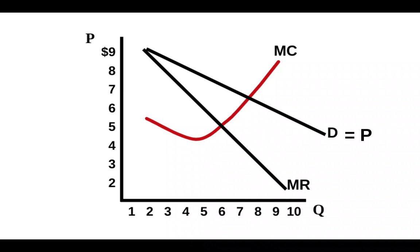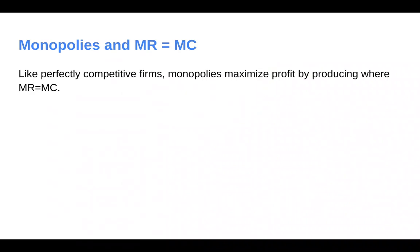Now one thing you may be asking yourself here is, should there be a market graph side by side? And the answer is no. This graph in front of you is the market. Because remember, in Monopoly, the market effectively is that one dominant firm. So we don't have to do side by side here. Another thing that's really nice is that like in perfect comp, monopolies maximize profit by producing where MR equals MC.